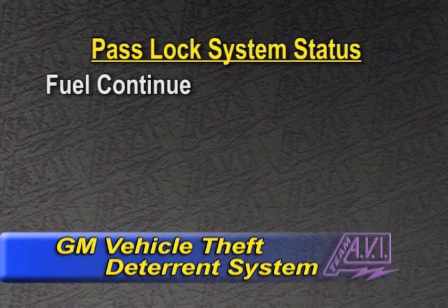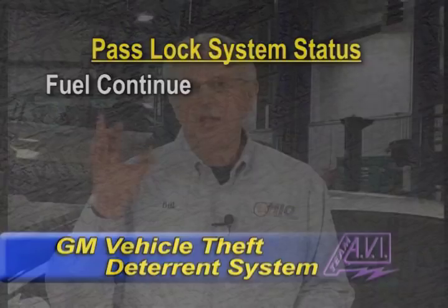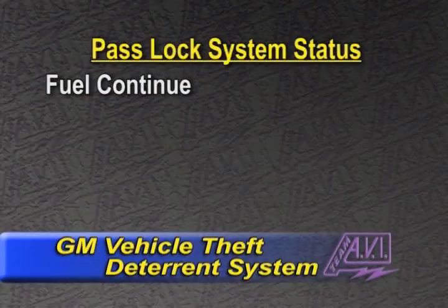Let's talk about PassLock system status and its modes of operation. Normally, if everything's working good, you're in what we call 'fuel continue' — in other words, the car starts and runs just fine, and the security light is off. Now, when something goes wrong, whether a bad PassLock sensor, circuit problem, bad BCM, whatever the case may be...